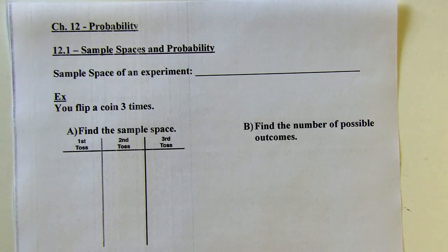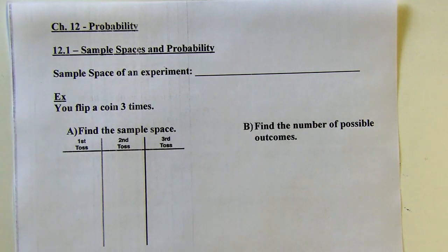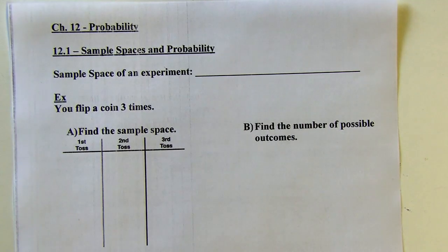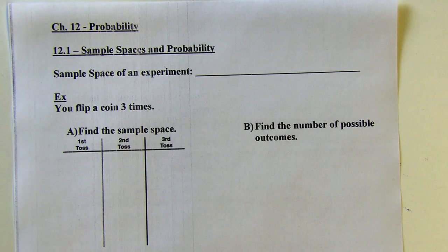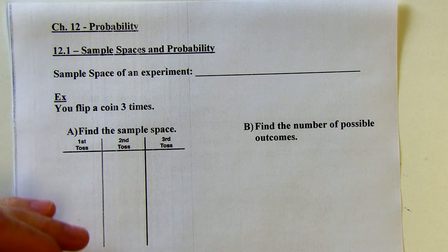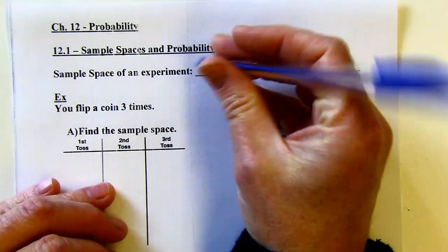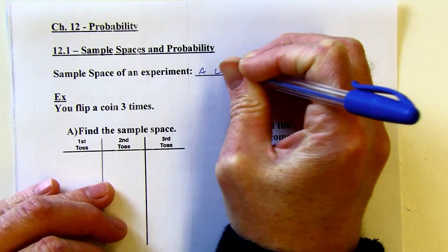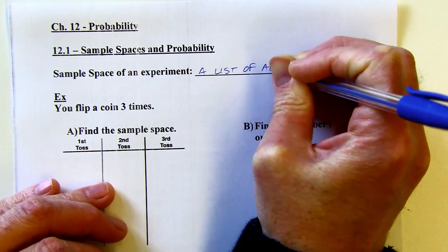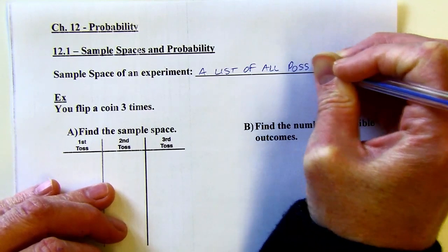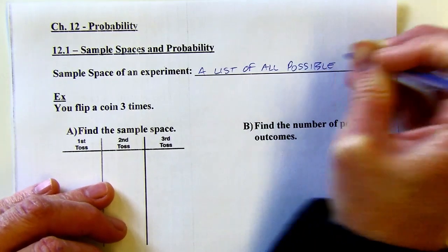Chapter 12 is probability, and 12.1 is sample spaces in probability. Let's talk about what a sample space is first. If you're running some sort of an experiment, the sample space is just a list of all the possible outcomes.